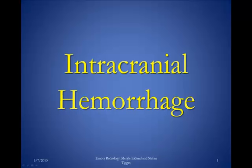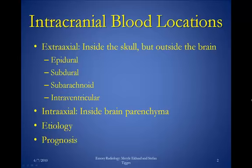Welcome to this podcast on intracranial hemorrhage. Today we're going to talk about some of the basics with relation to intracranial hemorrhage, including the major different locations of intracranial blood. These are generally put into two categories: the first being extra-axial hemorrhage or hematoma, which occurs inside the skull but outside the brain. The four major classifications include epidural hematoma, subdural hematoma, subarachnoid hemorrhage, and intraventricular hemorrhage. Next we have intra-axial hemorrhage, which occurs inside the brain parenchyma itself, and we'll discuss each of these in detail.